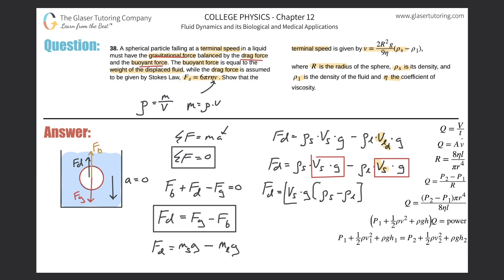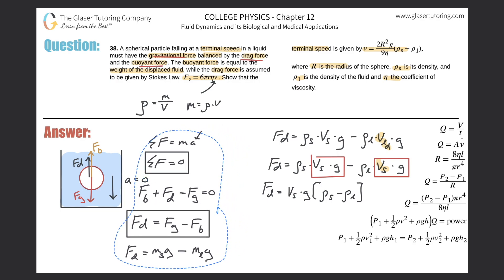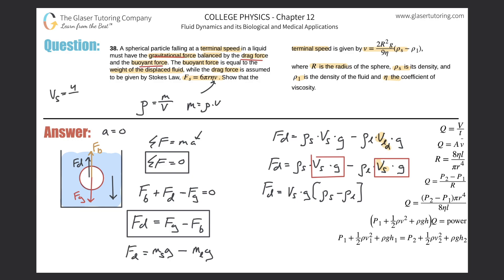Now I'll expand the volume of the sphere using the formula V = (4/3)πr³. Substituting in: F_d = (4/3)πr³ · g · (ρ_s − ρ_l). We're getting closer — the radius is now in the equation.